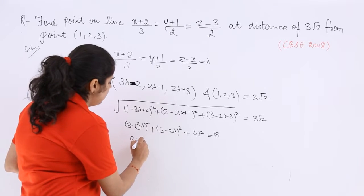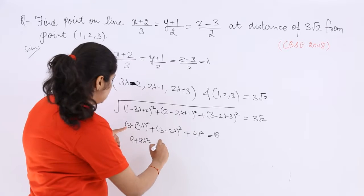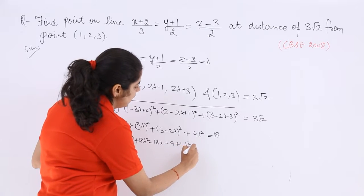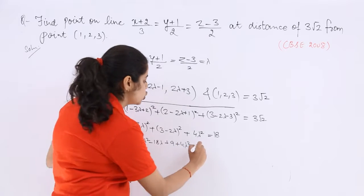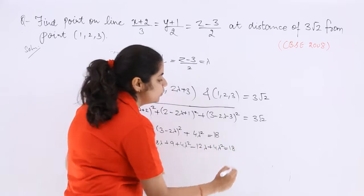So it should be 9 plus 9 lambda square minus 18 lambda plus 9 plus 4 lambda square minus 12 lambda plus 4 lambda square is equal to 18.